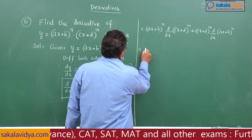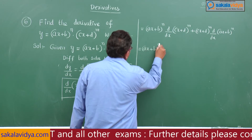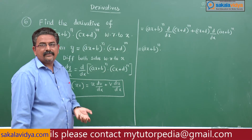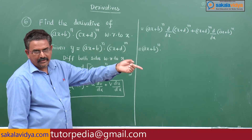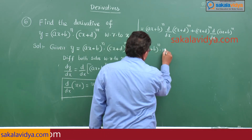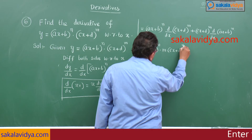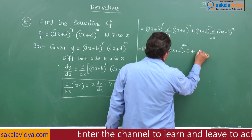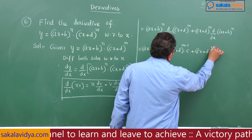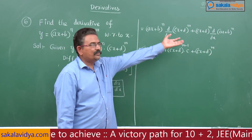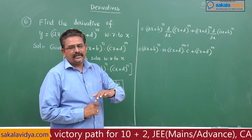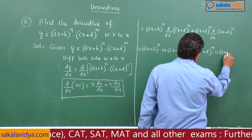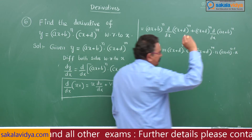Now, (cx + d)^m is of the form u^m. The derivative of u^m is m · u^(m-1) · du/dx. So the derivative of (cx + d)^m is m · (cx + d)^(m-1) · c, since the derivative of (cx + d) is c. Similarly, the derivative of (ax + b)^n is n · (ax + b)^(n-1) · a.